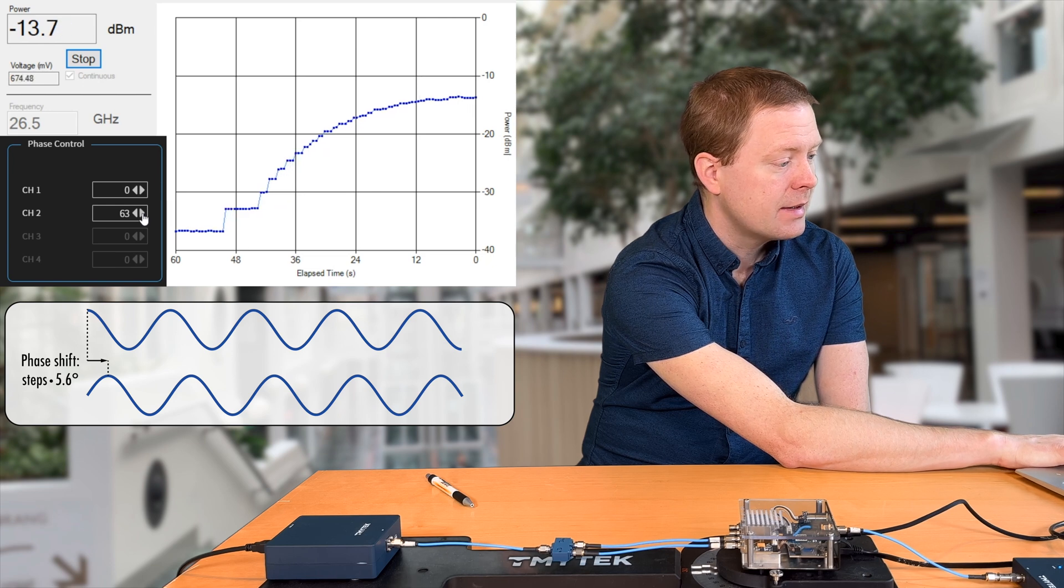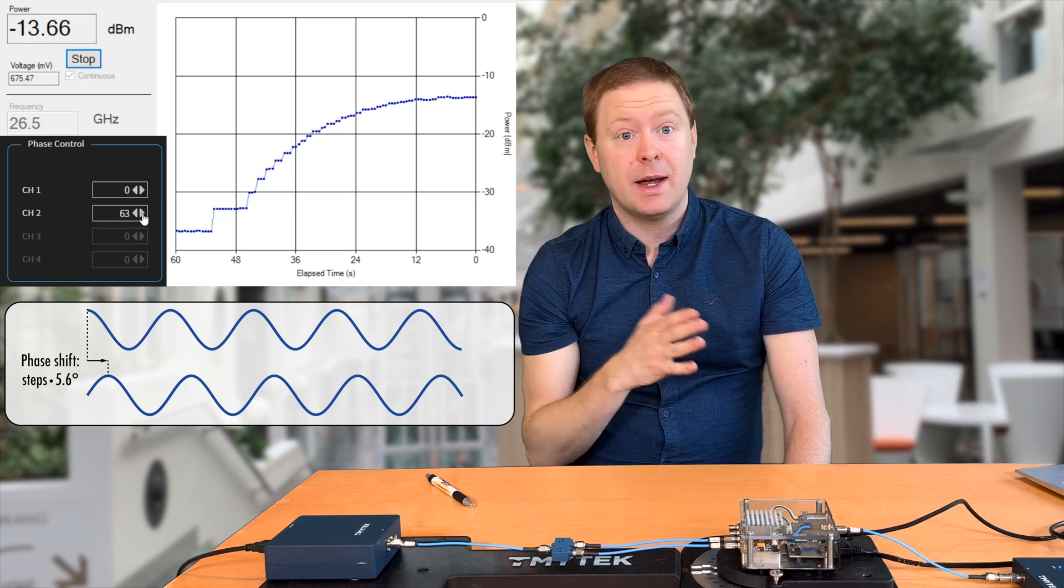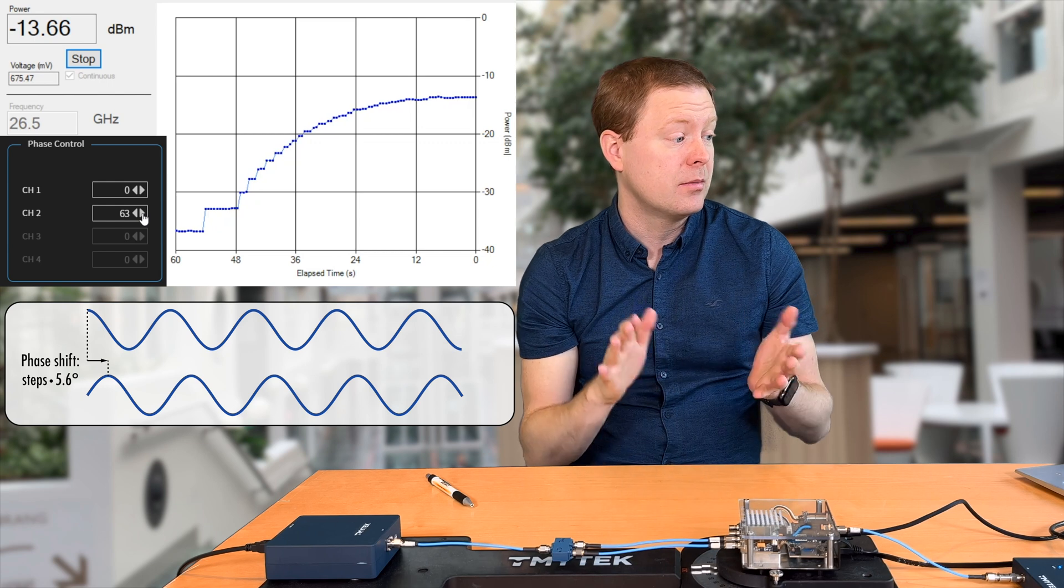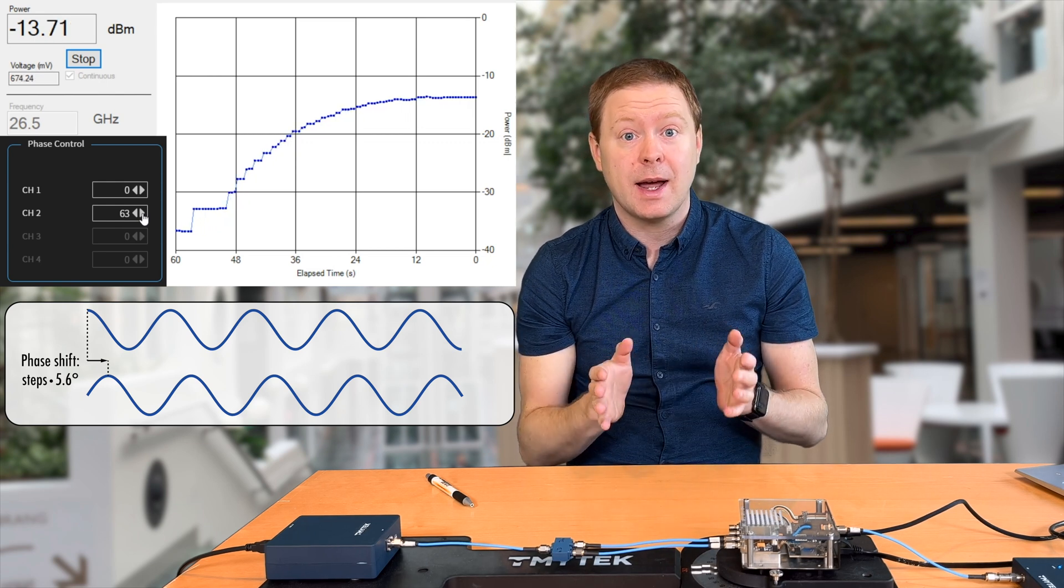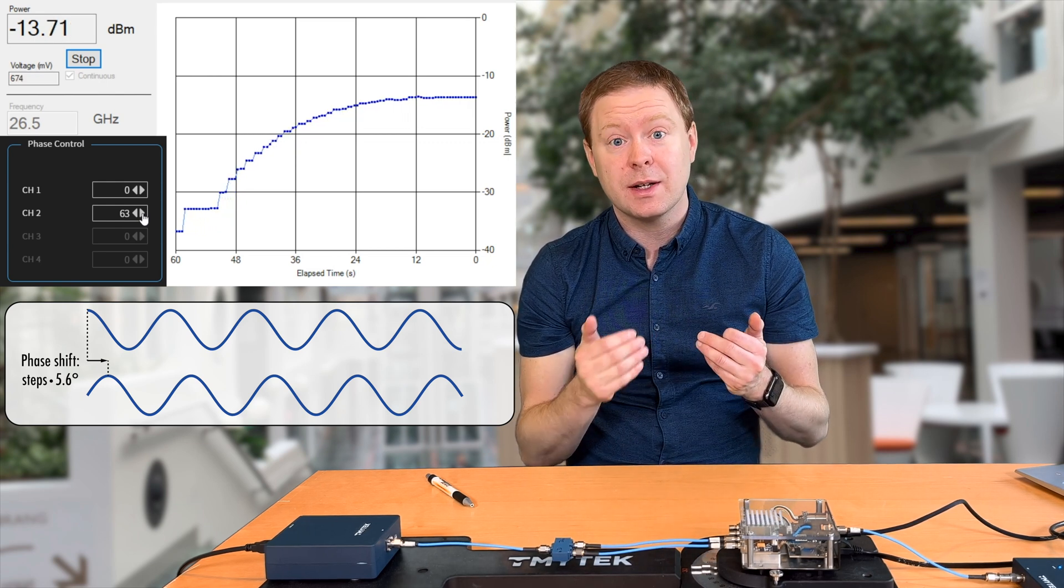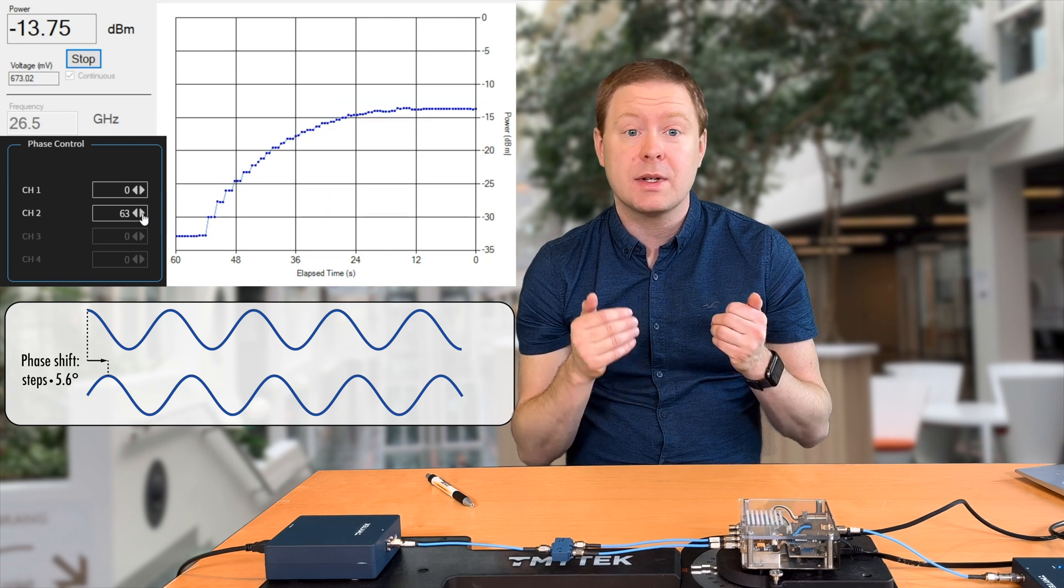And at 63, we are up at this minus 13.67 that we had from the beginning. So now the two signals are once again almost aligned in phases.